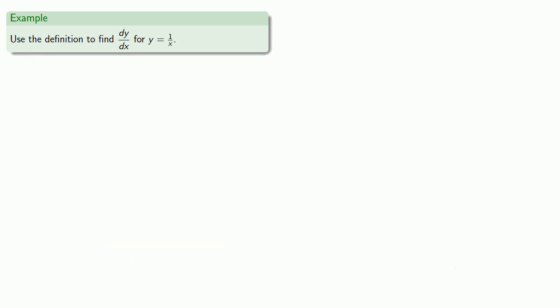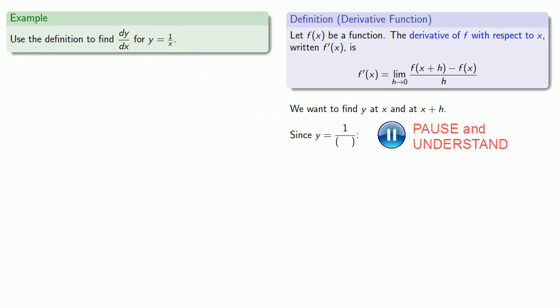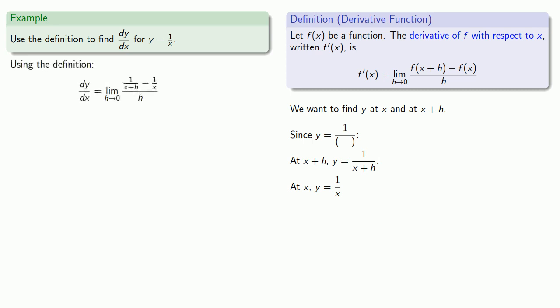Let's try another one. Again, we know that we need to use the definition to find the derivative, and we want to find y at x and at x + h. Our function is y equals 1 over x, so I'll drop out the x and leave an empty set of parentheses. At x + h, y is equal to 1 over x + h, and at x, y is equal to 1 over x. So I'll substitute those back into our definition of the derivative.